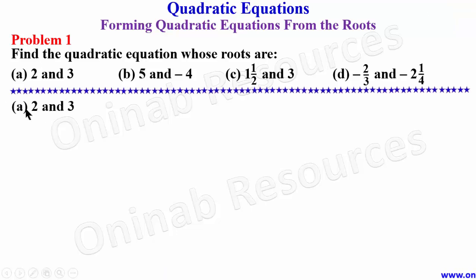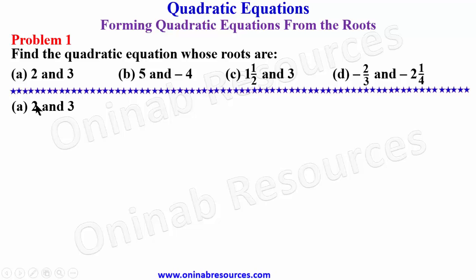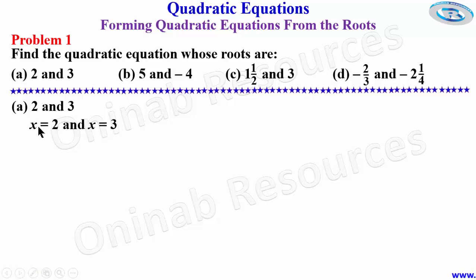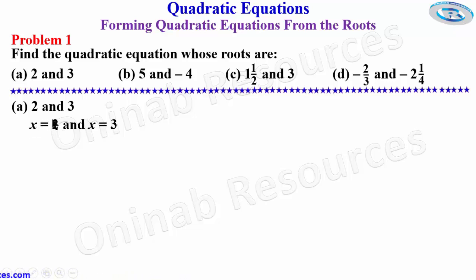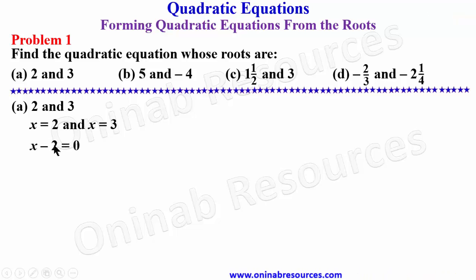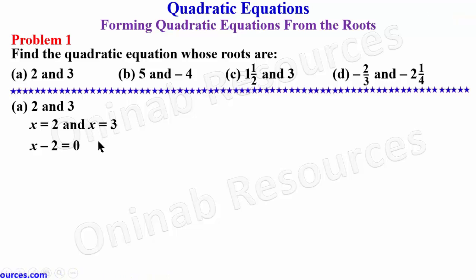For part (a) we have the roots to be 2 and 3, which means x is equal to 2 and x is equal to 3. From here we can form an equation and equate it to zero, either by taking these two to the left-hand side or by subtracting — using the balance method. Subtracting 2 from both sides, we are left with x minus 2 is equal to zero.